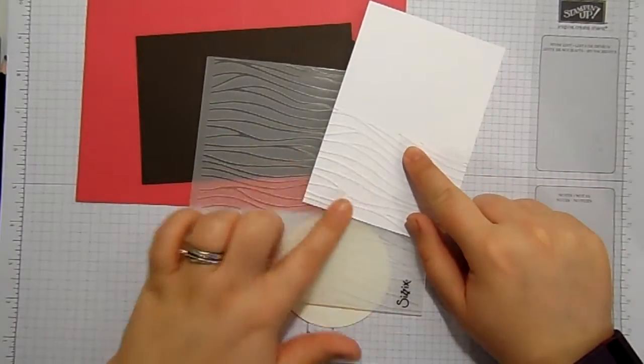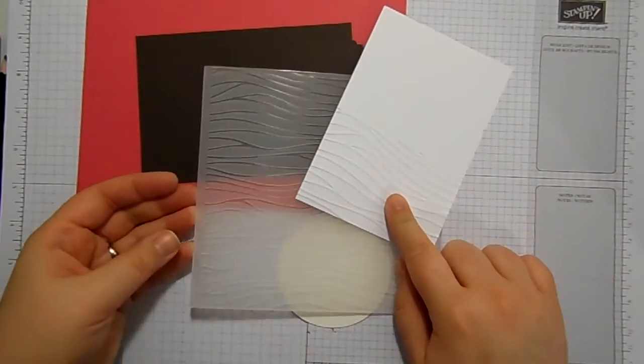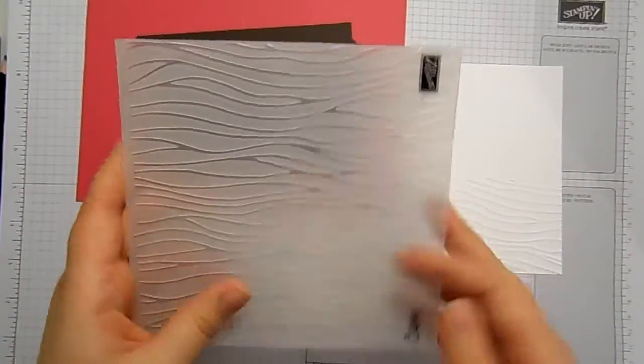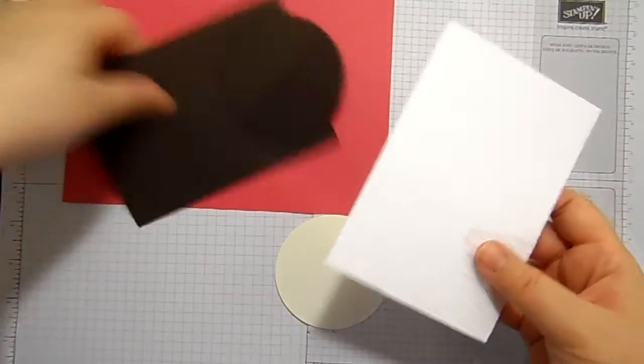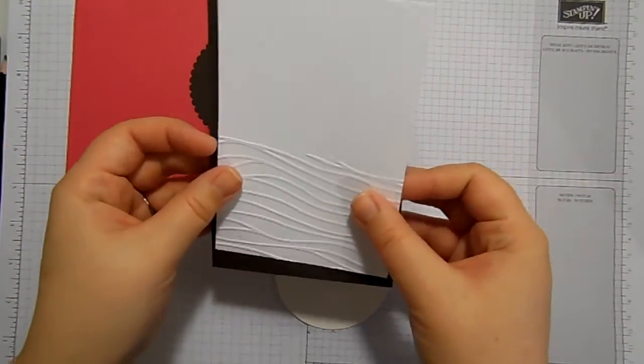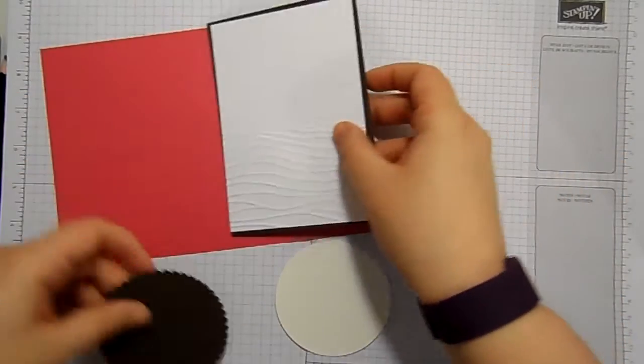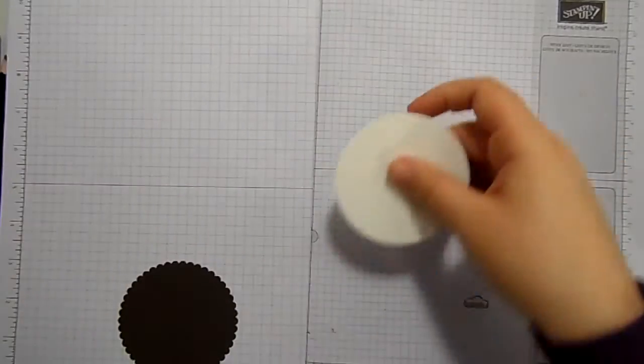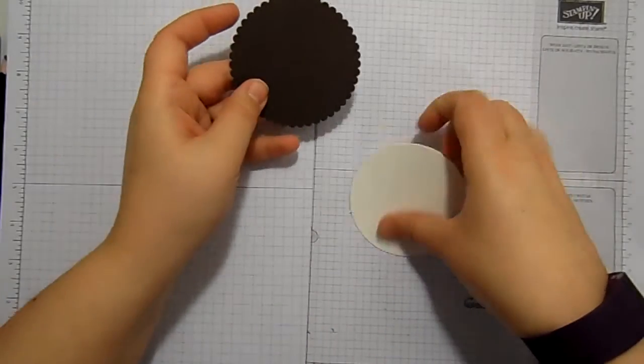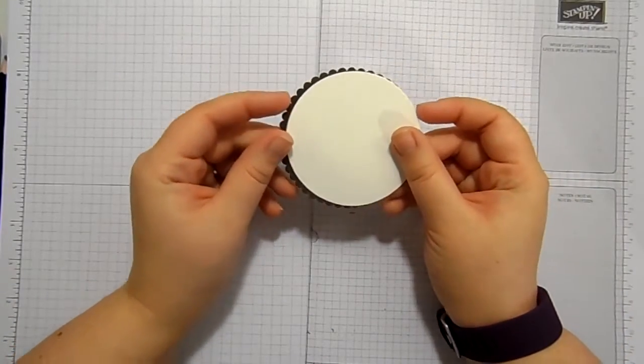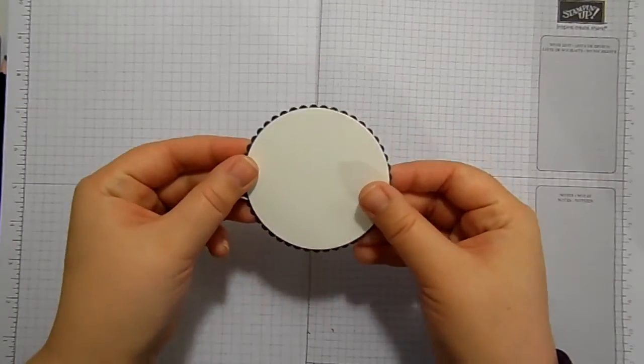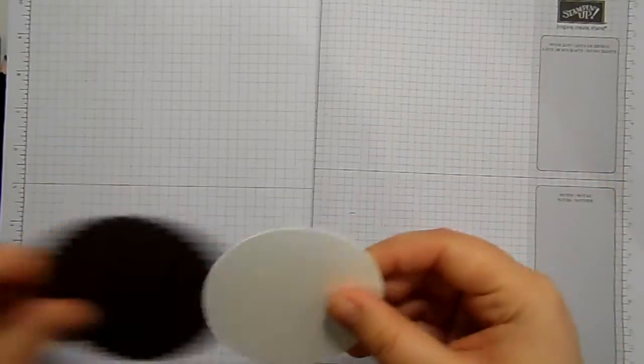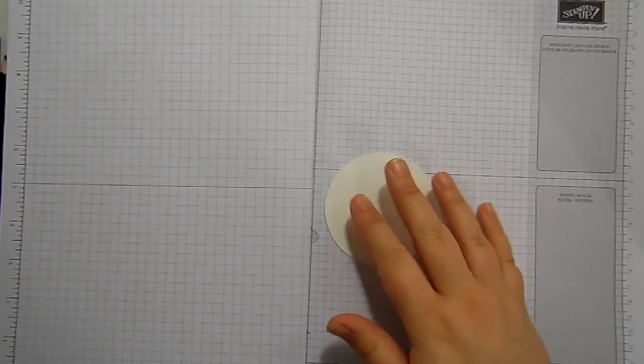I've already embossed this piece of Whisper White. This video is going really well, isn't it? With this fabulous embossing folder. I can't remember what it's called, but it will be linked in the description in the down bar below. And that's going to mount up on there just lovely and go onto our card base.